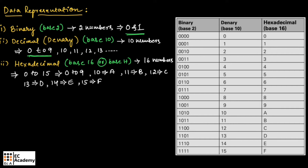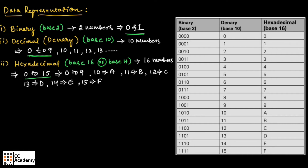So the hexadecimal number system has 16 numbers from 0 to 15. From 0 to 9 we write the number, and after 9 we write A, B, C, D, E, and F for numbers 10 to 15. This is shown in a table. A decimal number goes from 0 to 9, then 10, 11, 12, 13, 14, 15 and so on. In hexadecimal, A represents 10, B represents 11, C represents 12, D represents 13, E represents 14, and F represents 15.